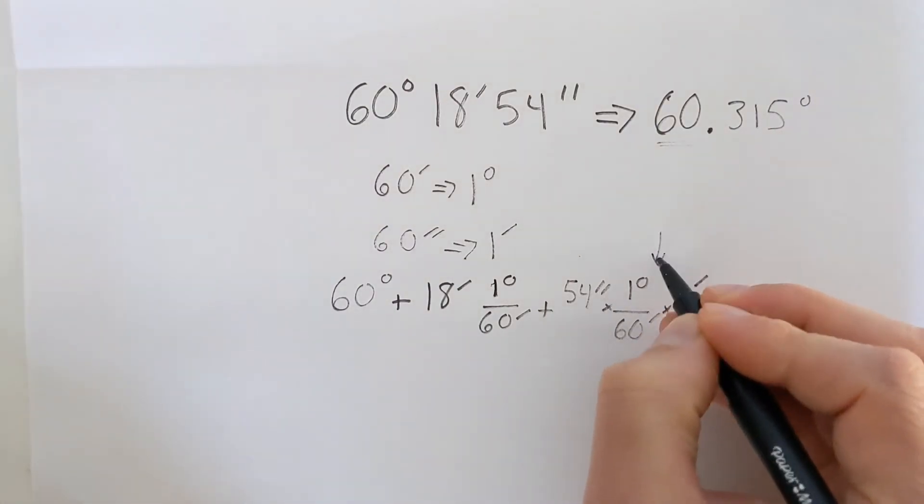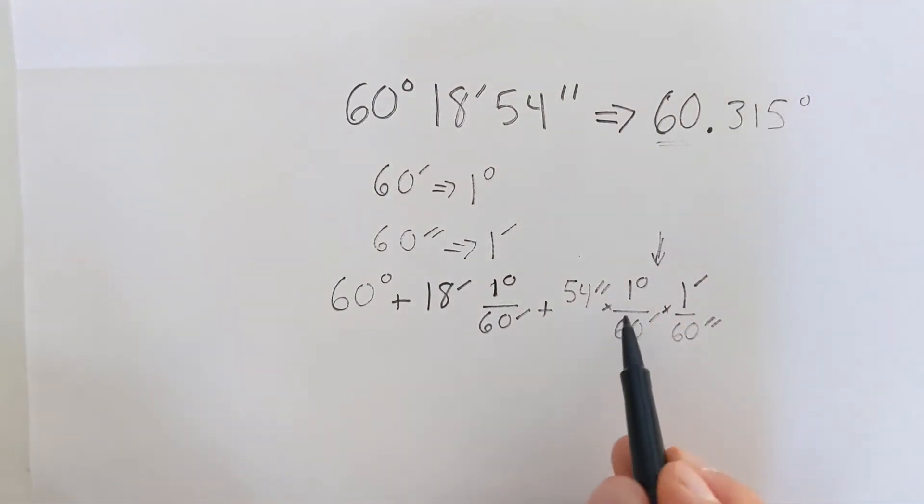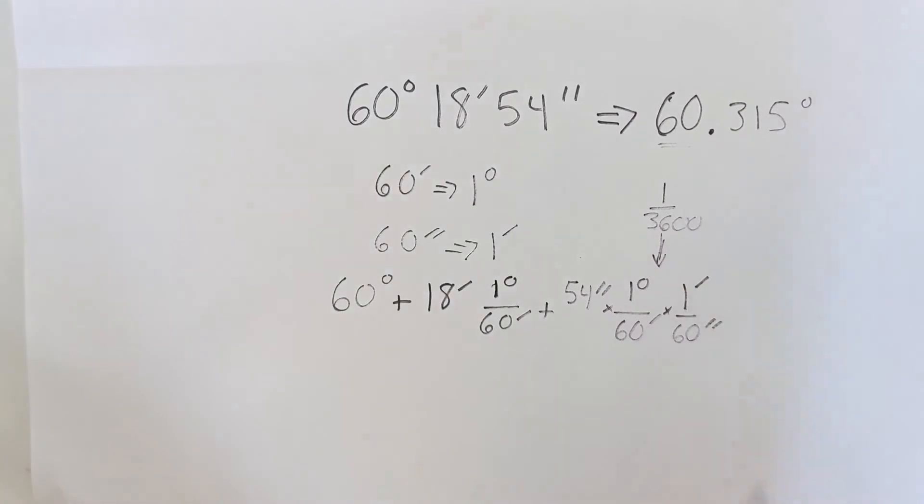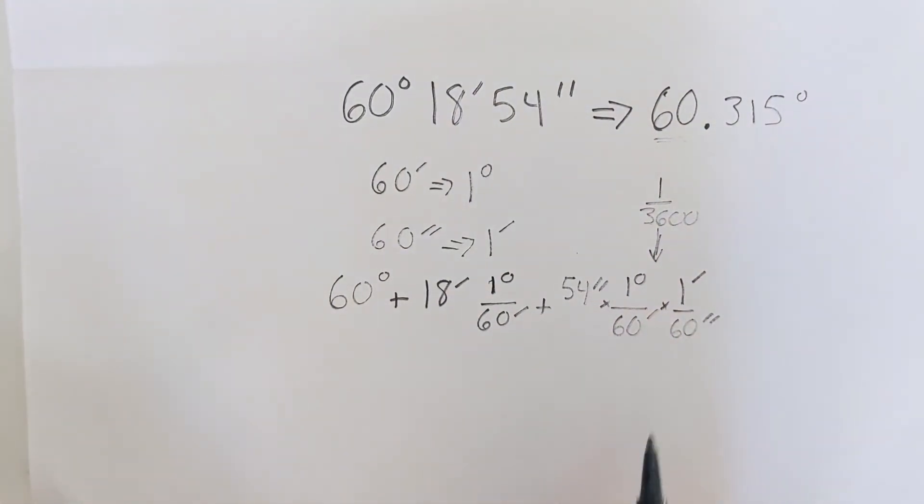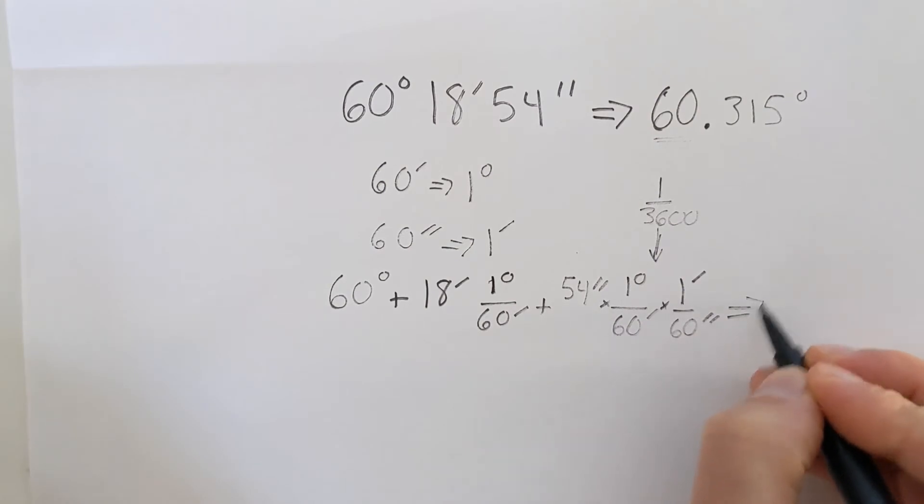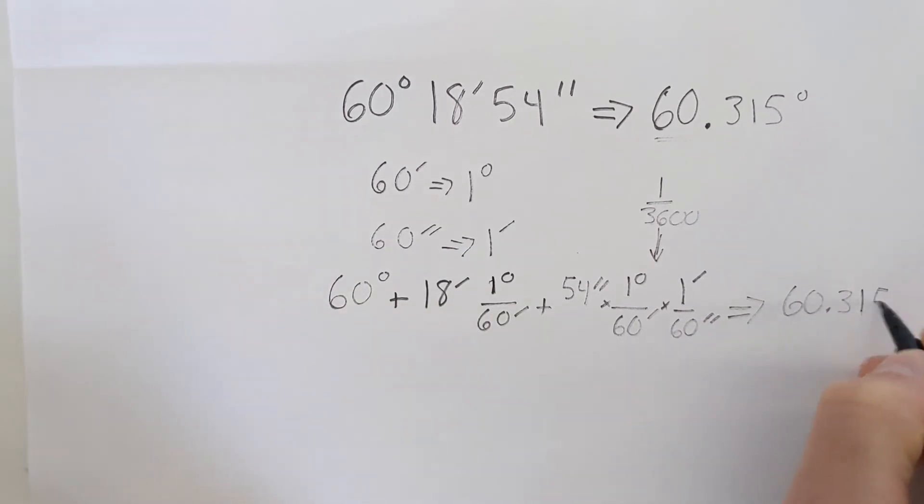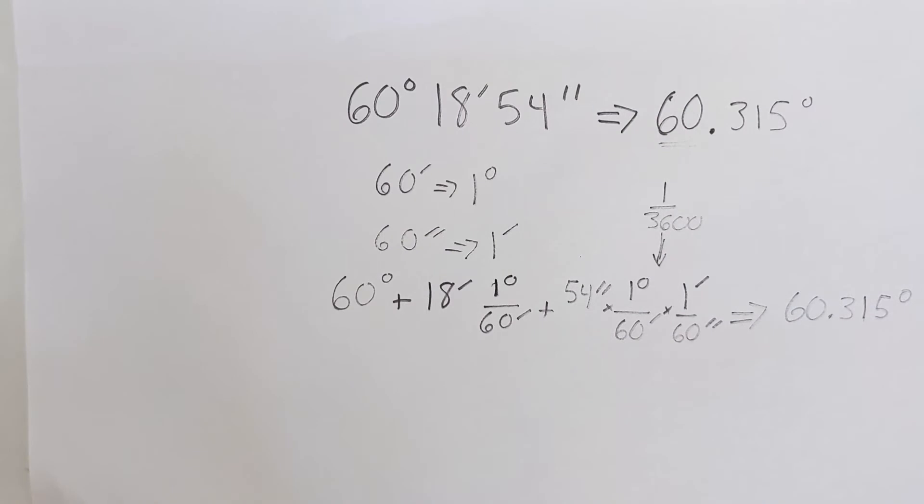So we're going to multiply those three times each other to convert the seconds into degrees. You also probably will quickly see that one over 60 times one over 60 is equal to one over 3,600. So you could use this function instead of these two, but you'll get the same value. And this will equal 60.315 degrees, just as we started out with.